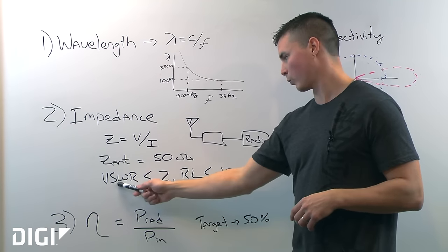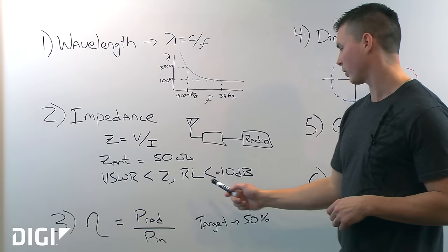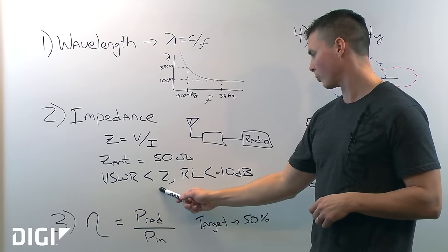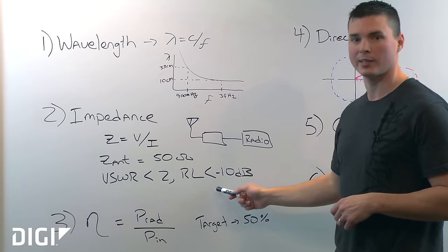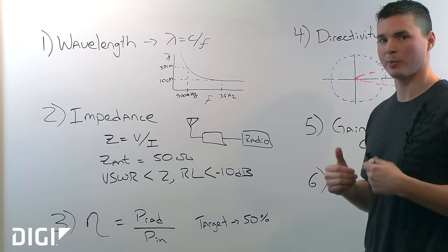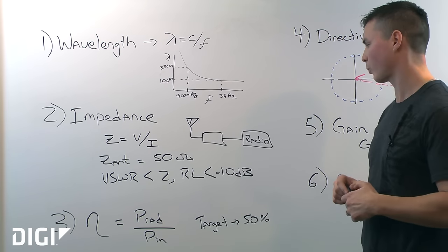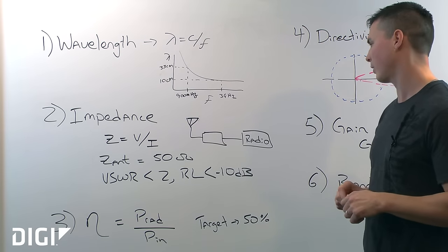There's voltage standing wave ratio, VSWR, and return loss. VSWR should be less than 2 and return loss should be less than -10 dB. And that correlates to a 90% transfer efficiency. So we're only losing 10% in our reflections.